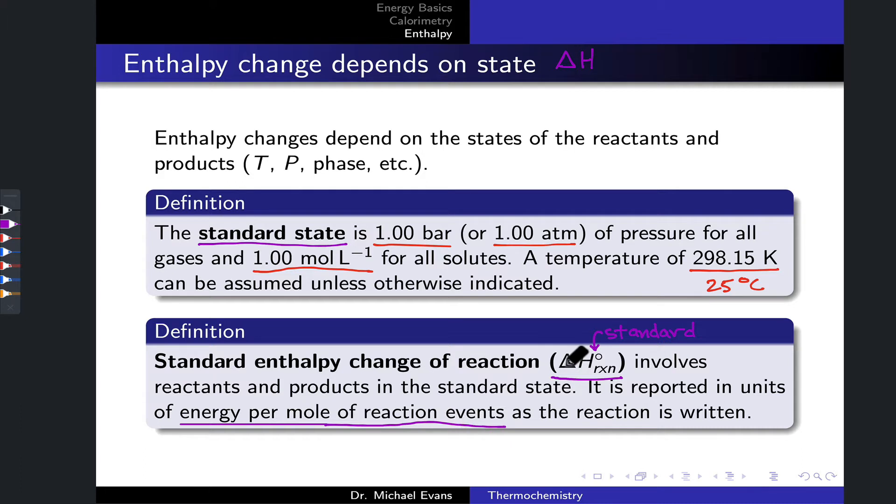Standard enthalpy change of reaction is independent of the stoichiometric coefficients of a reaction. It only depends on the number of reaction events that have taken place. We incorporate stoichiometry and divide by a stoichiometric coefficient if necessary, if we're calculating some amount of heat, so that the standard enthalpy change of reaction value is per mole of reaction events that have taken place.